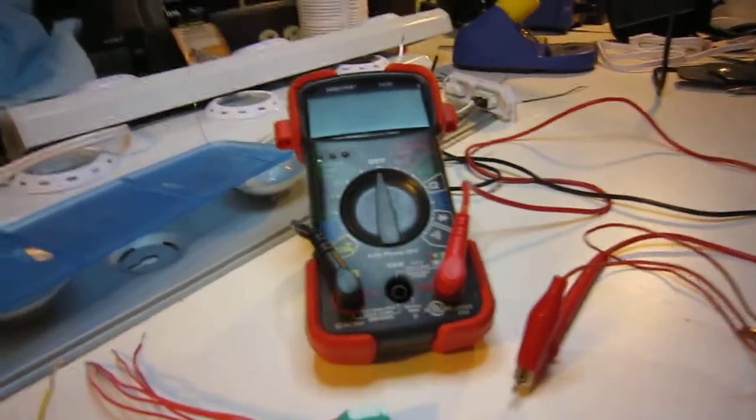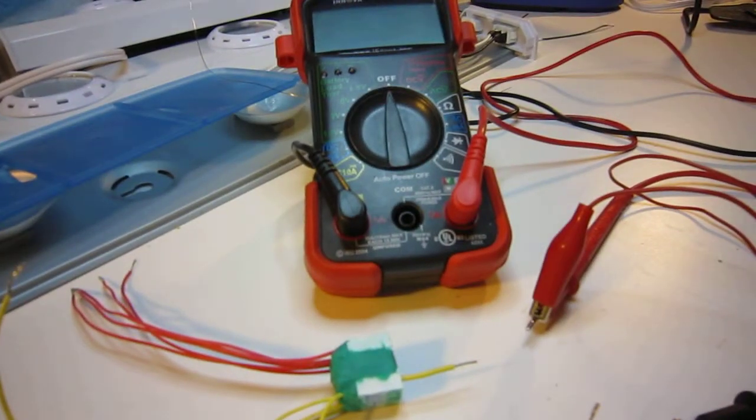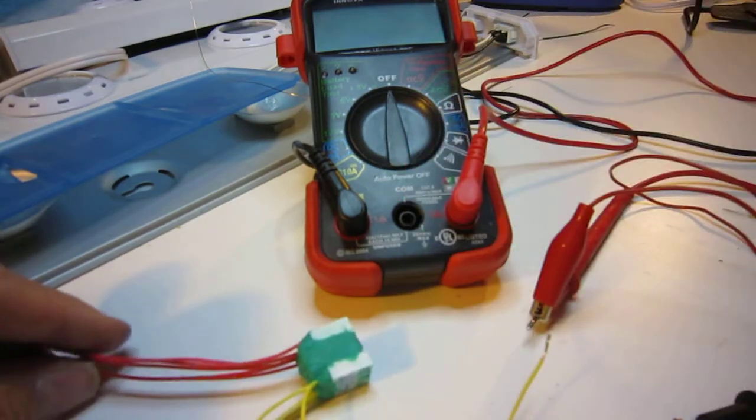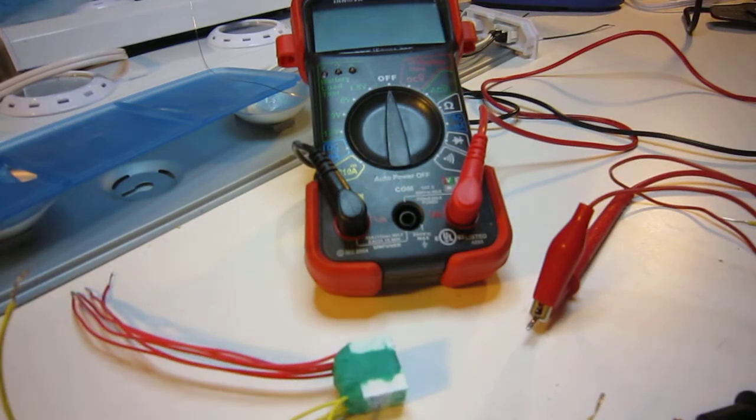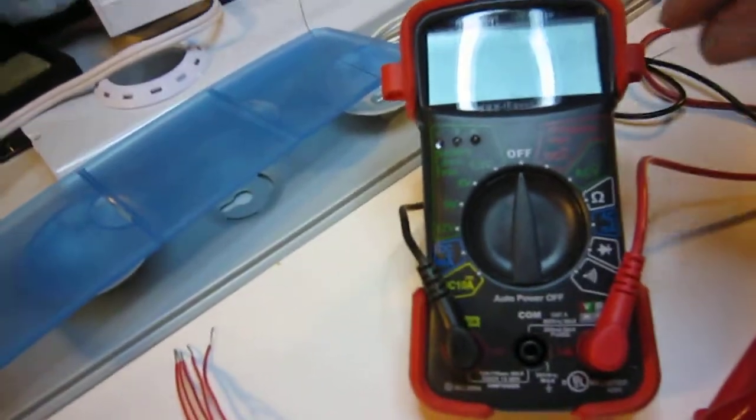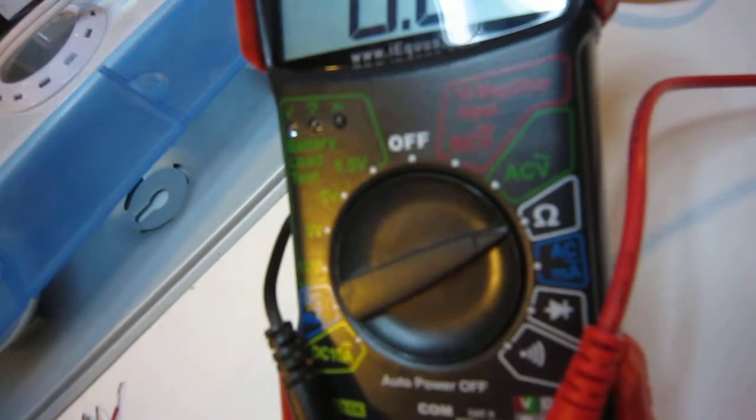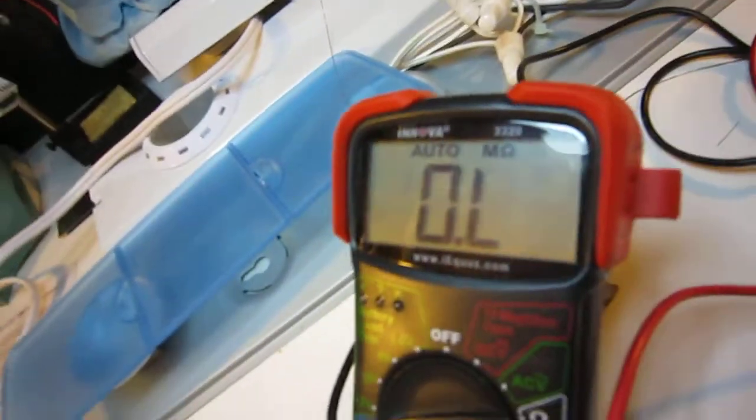The next test that we do is we're going to test the ohms to make sure that the resistor is working. We will remove this portion here and turn the multimeter over to ohms, which is this right there, and you can see that we get a reading.